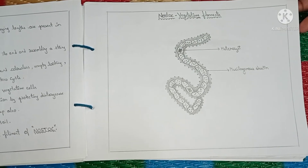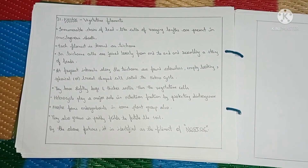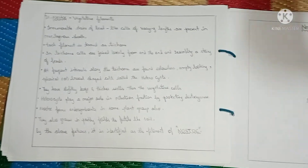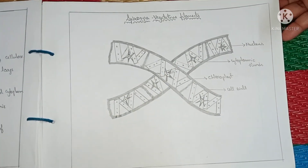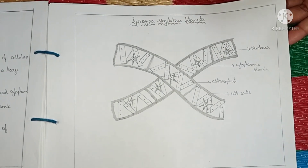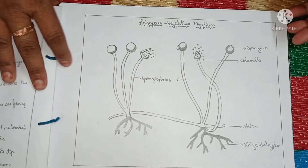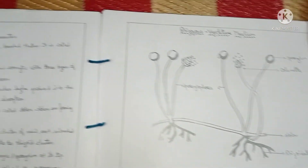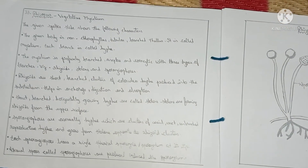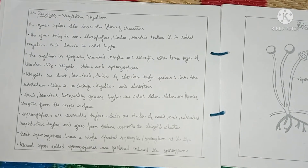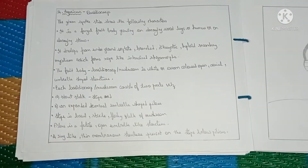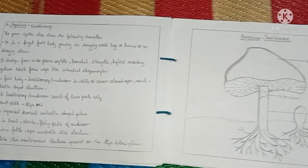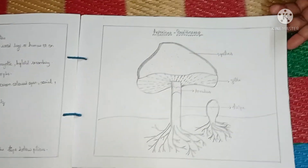Lower plant vegetative elements include: details of Nostoc with vegetative elements, details of Spirogyra with vegetative elements, diagram of Spirogyra, Rhizopus vegetative mycelium diagram, details of Rhizopus, details of Agaricus, and diagram of Agaricus.